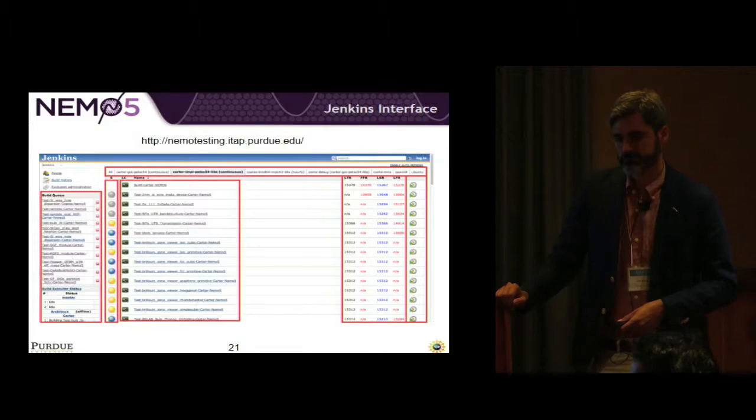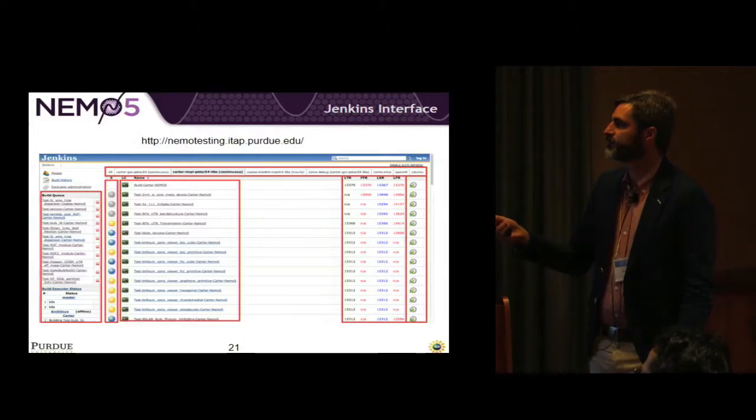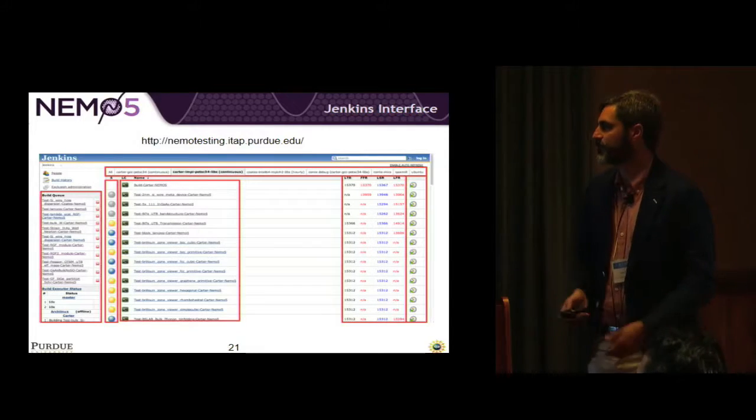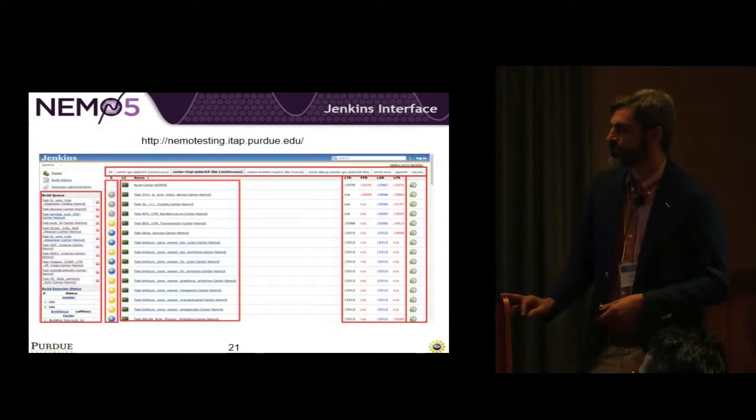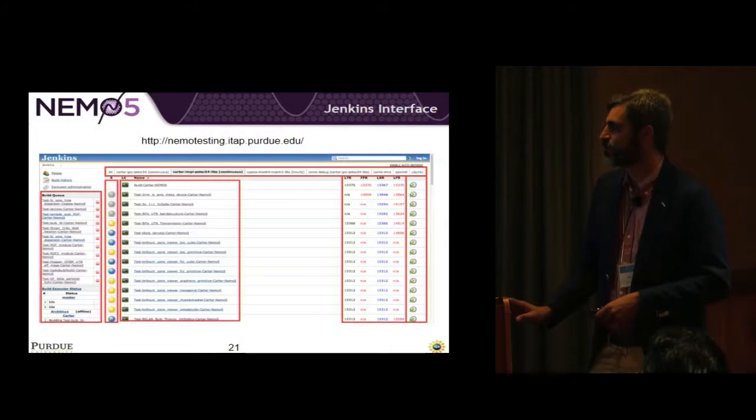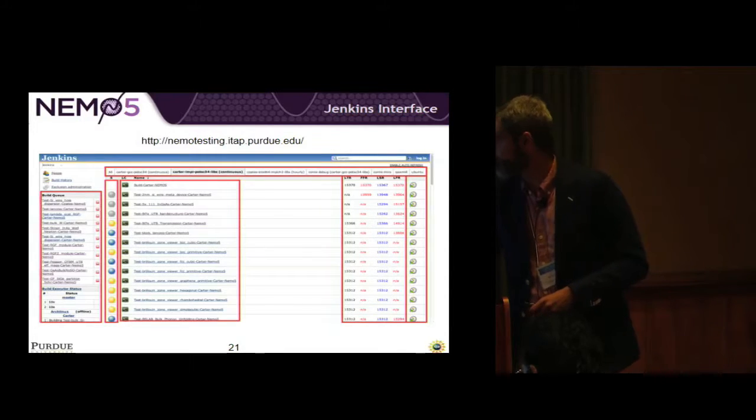So Jenkins gives you this really nice interface. We have different, these are the different builds like compilers and machines up here, tests. You can see the build queue. This is all the stuff that it's going to run. If there's one drawback to Jenkins, it's almost, it's too flexible. It can be, I've gotten more acquainted with it over the past couple of years than I can say I thought I would or that I would have wanted to.